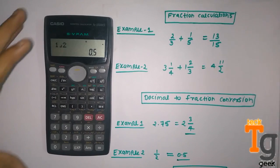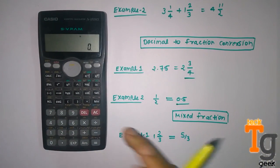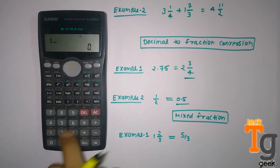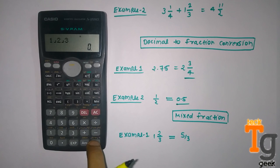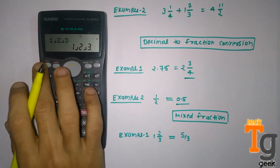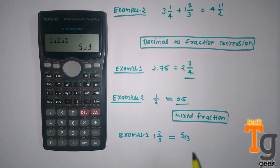Now time for mixed fractions. And the question is 1 and 2/3. And if you want to convert in this one, then simply press shift and then a b/c, and it will convert to 5/3 as a simple fraction.